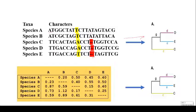The next is the distance-based methods. In the distance-based method, it is more different compared to the character-based method. The distance-based method calculates the overall differences between the sequences of different species available. For example, here you can see that there are five species A, B, C, D, and E, and based on the overall sequence alignment, distance-based methods will calculate the overall difference between each of the species with the rest of the species under study, build a matrix, and based on that matrix a phylogenetic tree is generated.